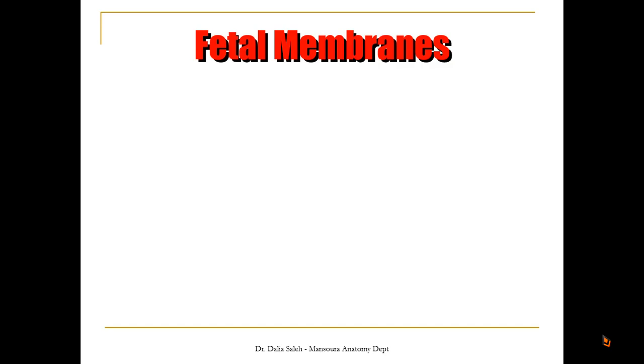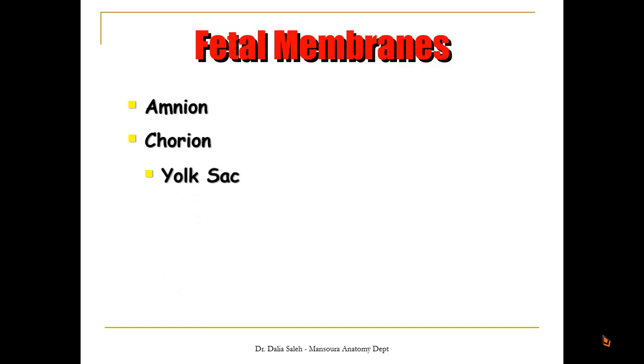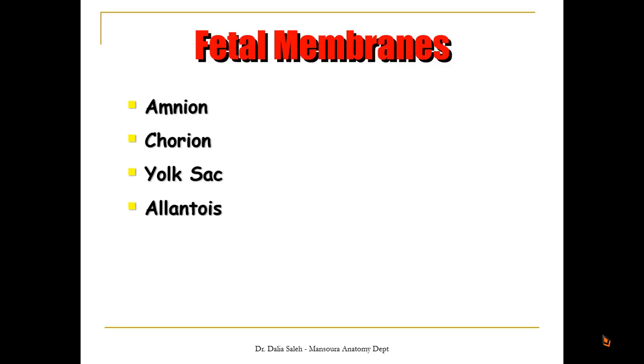The fetal membranes are the coverings and the cavities that wrap around the developing embryo and protect it during its development. These are the amnion, the chorion, the yolk sac, and the allantois.